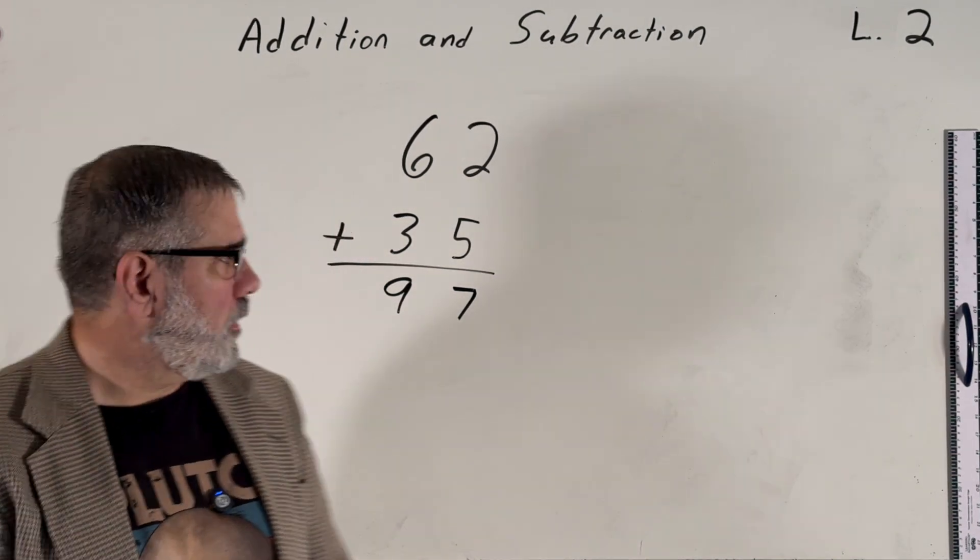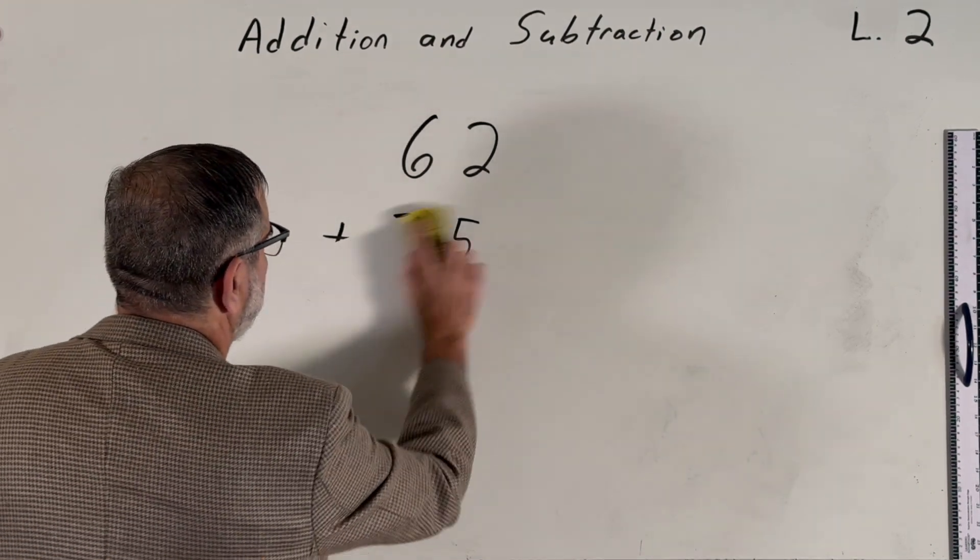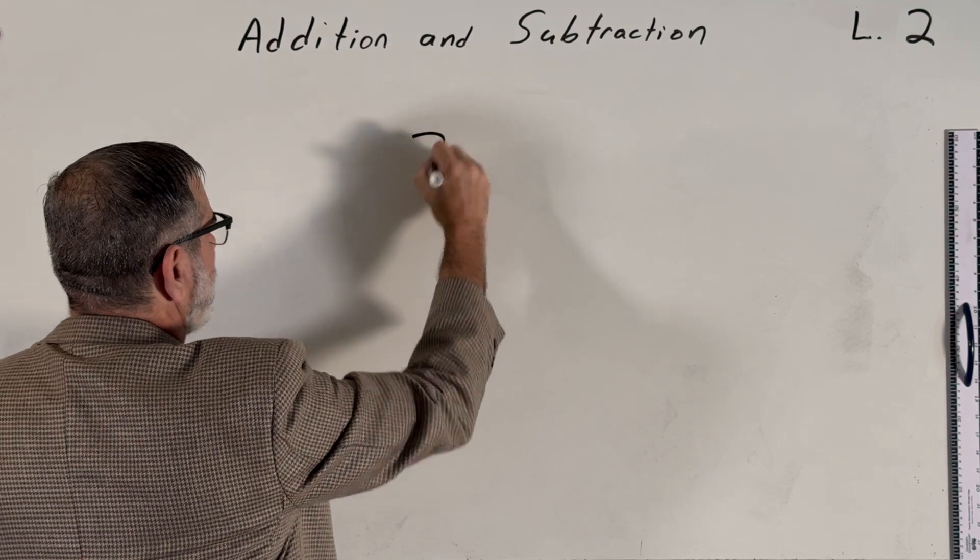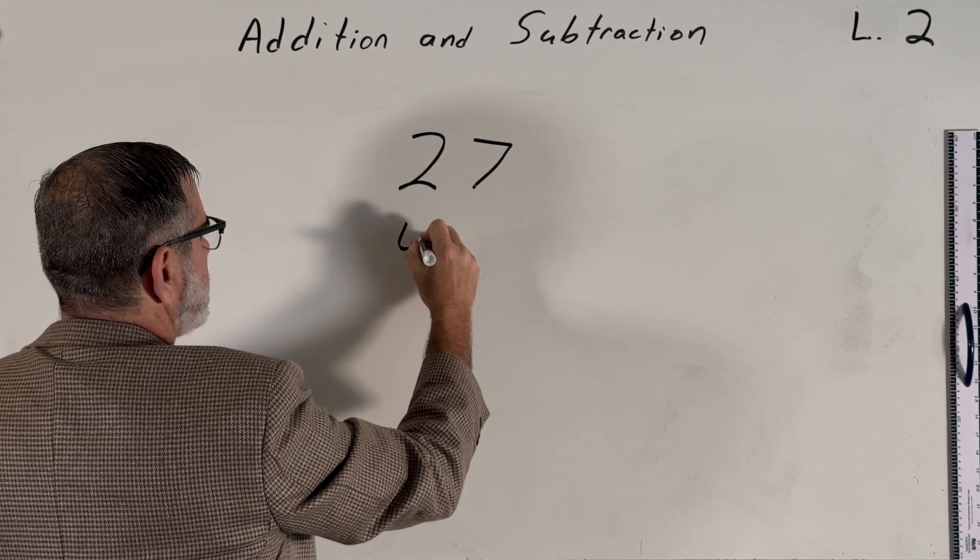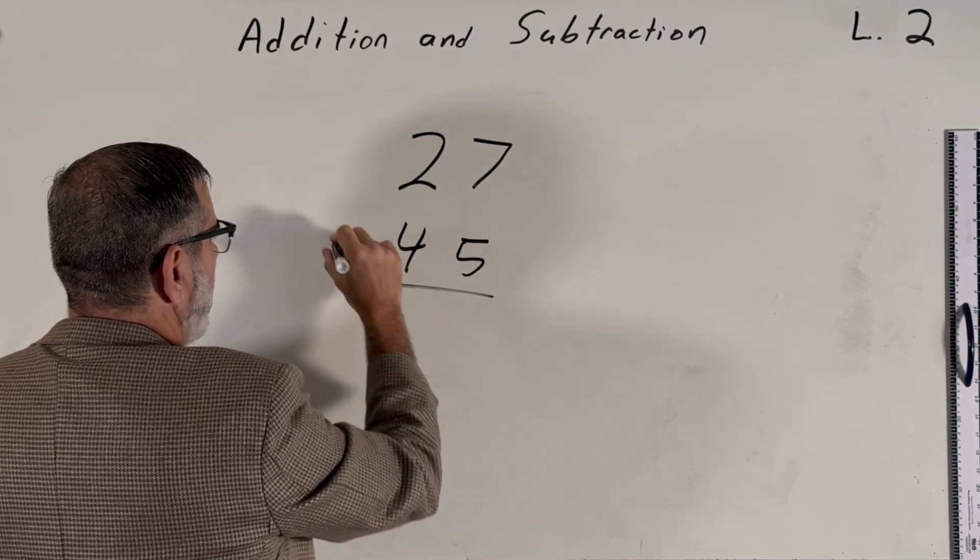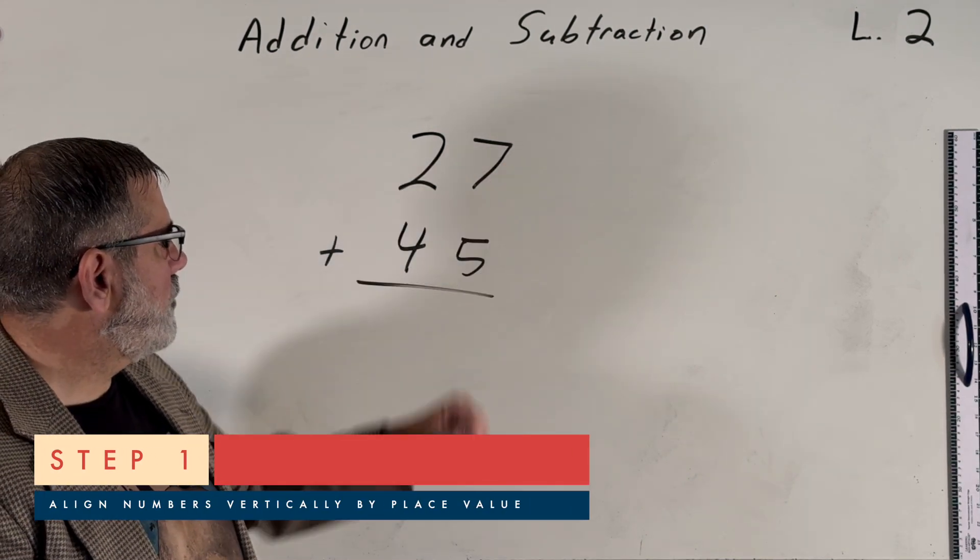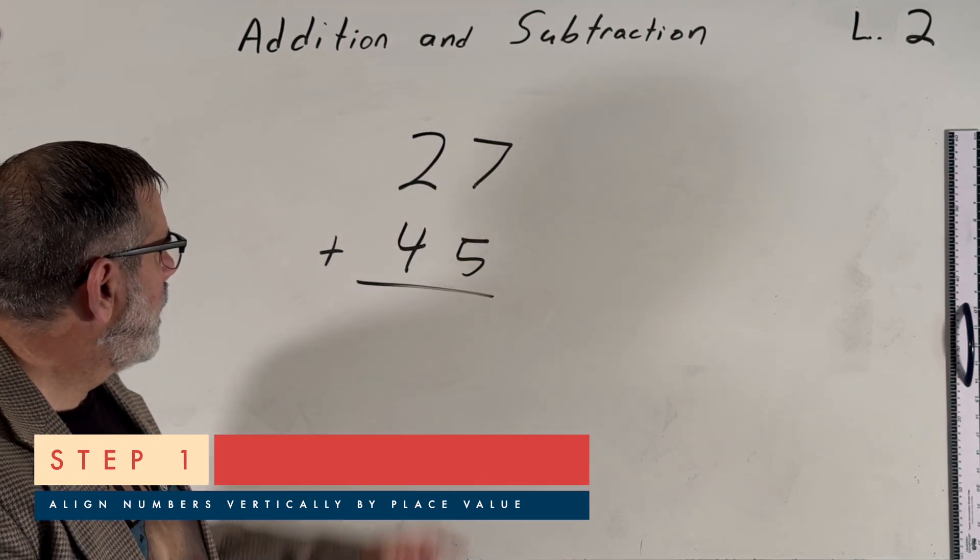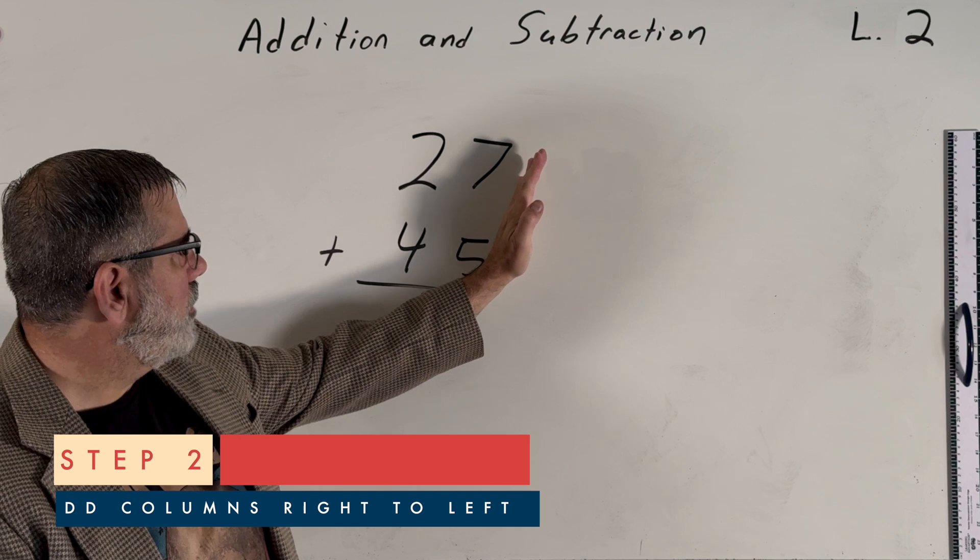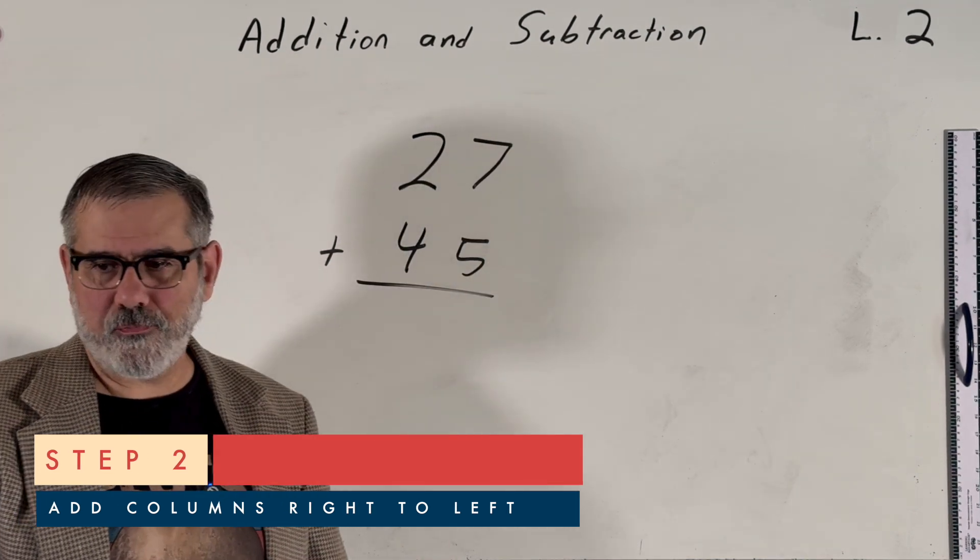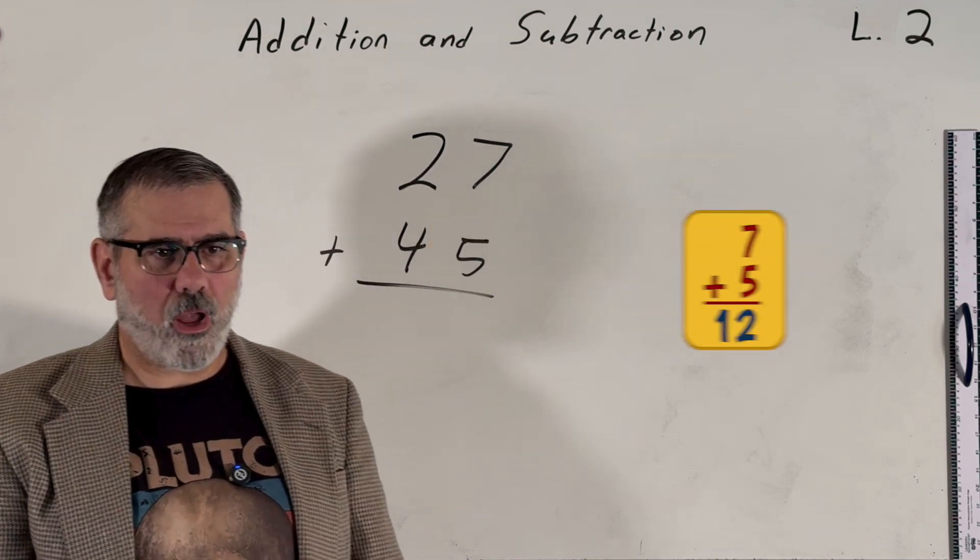Let's try another one. Let's try 27 plus 45. Again, we line up each number vertically by place value, and then we add column by column starting on the right. So the first column we have to deal with is seven plus five. Now, seven plus five is 12.